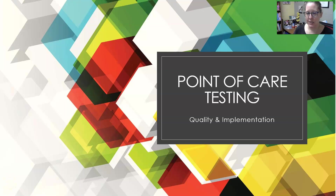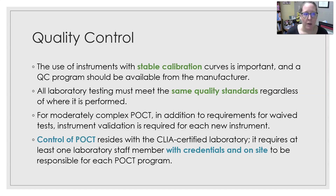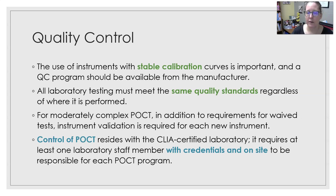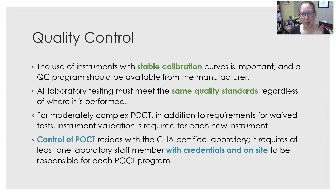Hi, this is Dr. A, and in our second video on point of care testing, we are going to talk about quality in point of care testing and how to implement point of care testing at your facility. For quality control, we use instruments with stable calibration curves — that is super important. We don't need to be fiddling around with calibrations; it needs to be very easy and very stable. There should also be a QC program available from the manufacturer. All lab testing has to meet the same quality standards regardless of where it's performed, whether it's the central lab or point of care.